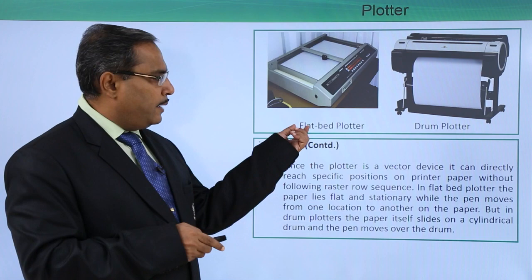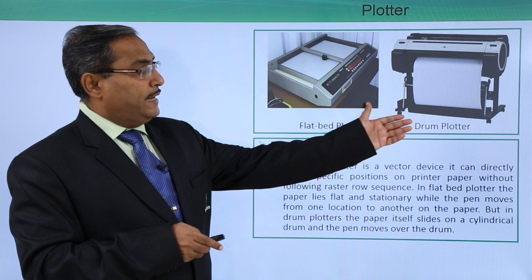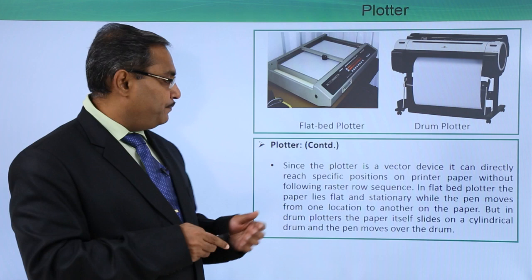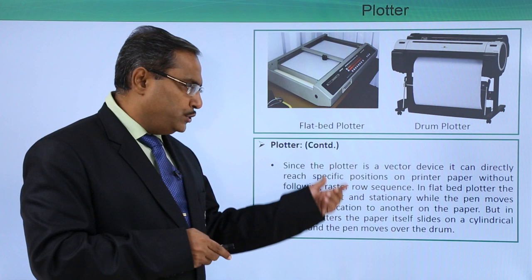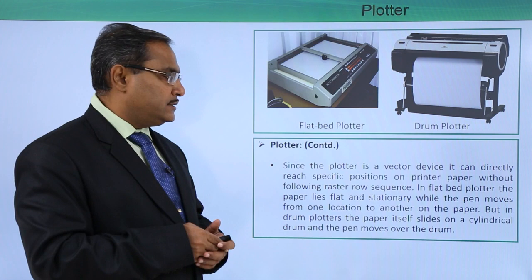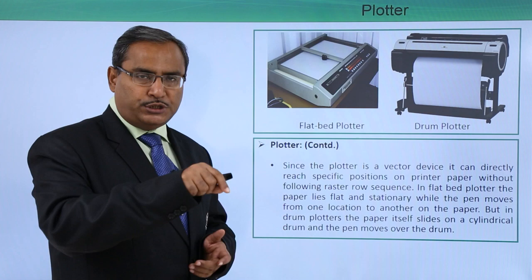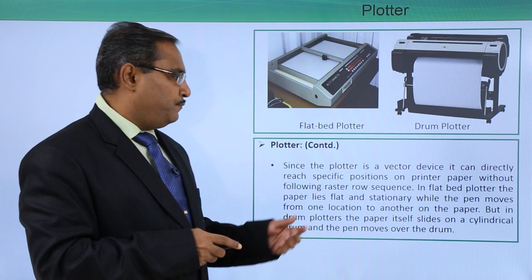Now we are going for the plotter continuation. Here you can see we have a flat bed plotter and a paper drum plotter. It can deal with large paper, and for some architectural drawings the drum plotter can also be used. Since the plotter is a vector device it can directly reach specific positions on the paper without following the raster row sequence — it will directly go to the respective position and start drawing the image and diagram.